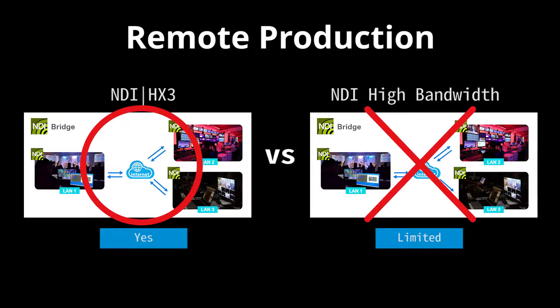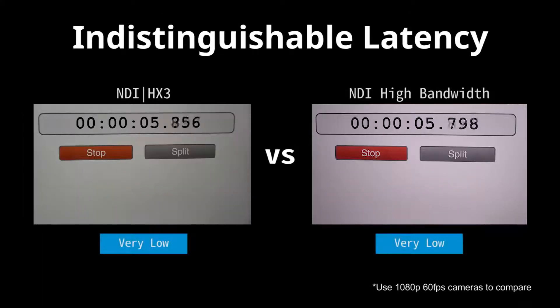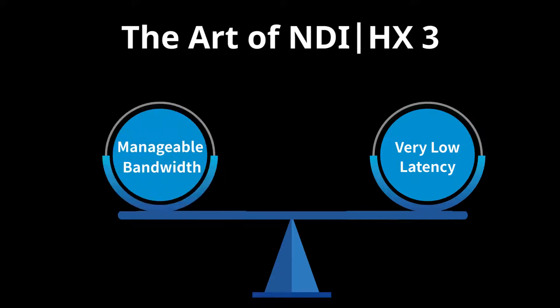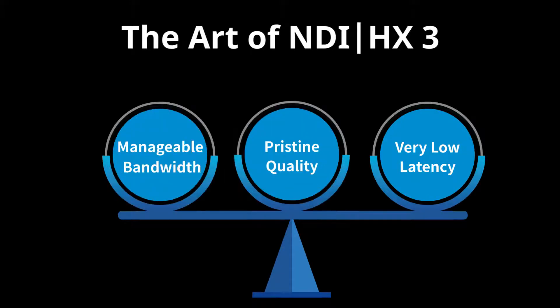NDI-HX3 is more bandwidth-efficient and makes remote production possible, bringing incredible flexibility and creativity. NDI-HX3 and NDI high-bandwidth are almost indistinguishable in terms of latency. NDI-HX3 delivers the perfect balance of bandwidth and quality.